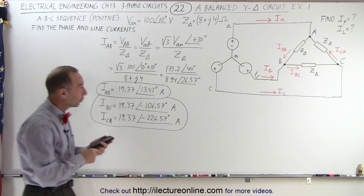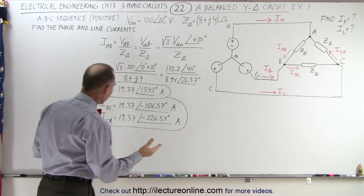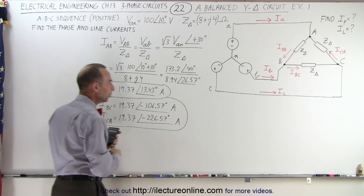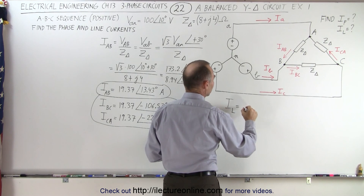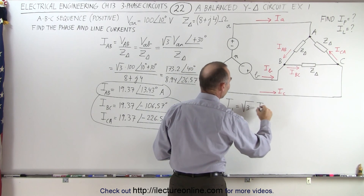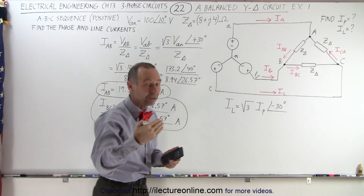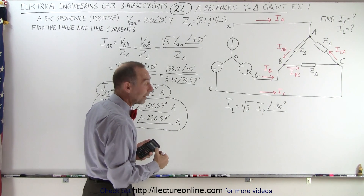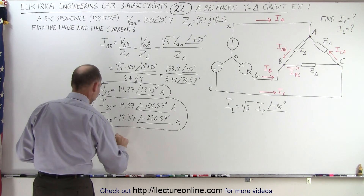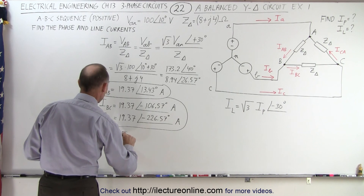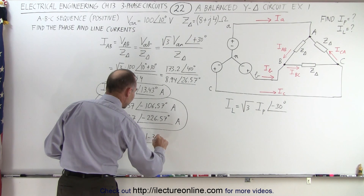From those, we now need to find the line currents — the currents that feed the load: IA, IB, and IC. There is again a difference between the magnitude and phase. The line current equals the square root of 3 times the phase current, with a phase shift of minus 30 degrees. So we subtract 30 degrees from the phase angle and multiply the magnitude by the square root of 3. That means IA equals the square root of 3 times IAB, but with a shift of minus 30 degrees.